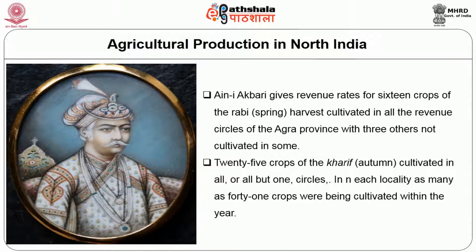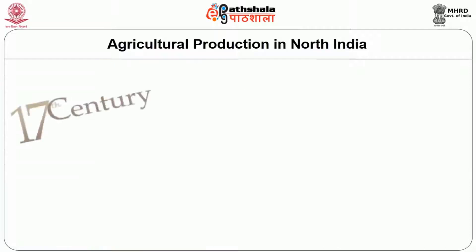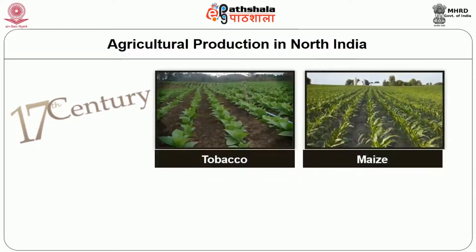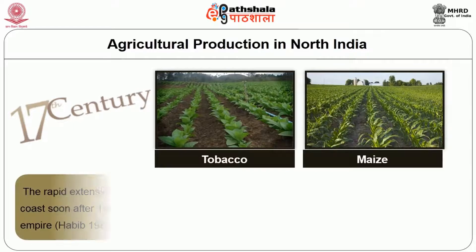Not only did the Indian peasant grow a multiplicity of crops, but he was also prepared to accept new crops. The 17th century saw the introduction and expansion of two major crops, tobacco and maize, both immigrants from the new world. The rapid extension of tobacco was spectacular — its cultivation began on the western coast soon after 1600, but by 1650 it was being cultivated in almost all parts of the Mughal Empire.